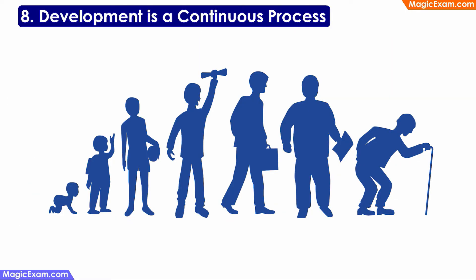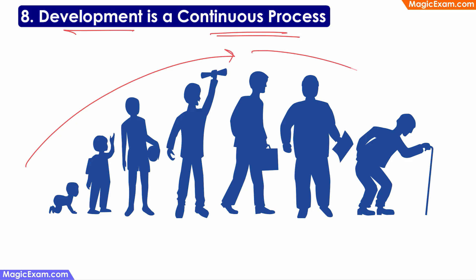The last important principle is that development is a continuous process. Development cannot be stopped because it has various aspects — physical, mental, social, moral, and emotional development. Even if physical development stops after a particular period, the other types of development will continue for the duration of the person's life. Therefore, development is a continuous process which cannot be stopped anywhere.